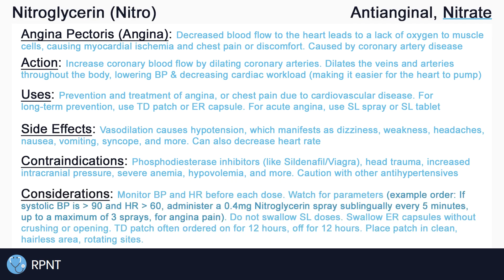Always remember to assess and monitor for side effects of nitroglycerin. Especially in acute instances of angina pain where a sublingual spray or tablet will be used, monitor blood pressure and heart rate before each dose to ensure the client's vital signs are within normal limits. Sometimes clients will have blood pressure and heart rate parameters on their nitroglycerin order. For example, an order may read: if systolic blood pressure is greater than 90 and heart rate is greater than 60, administer a 0.4 mg nitroglycerin spray sublingually every 5 minutes, up to a maximum of 3 sprays for angina pain. So our parameters here are that systolic blood pressure must be above 90 and heart rate must be above 60. If these are not true, we cannot give nitroglycerin.